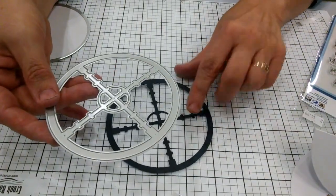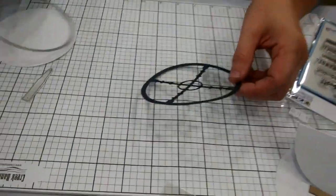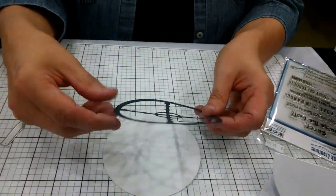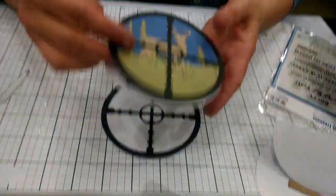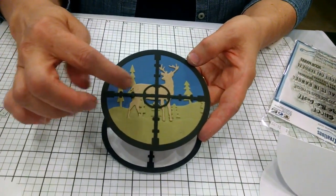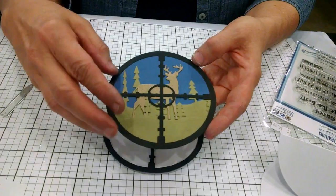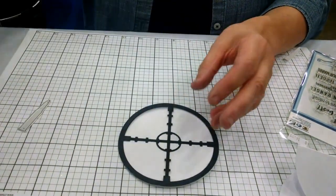So what we're going to do is adhere the black crosshair piece to the white. Now if you want to make a card like I did here where I added the deer in the background, the landscape background, those are also dies that we offer. You want to do that before you adhere the crosshair down. In this case, I'm gonna go ahead and put it down.